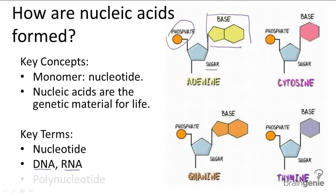The nucleotide bases shown here are the four DNA bases: adenine, cytosine, guanine, and thymine. RNA has the same bases except for thymine, which is replaced by uracil.